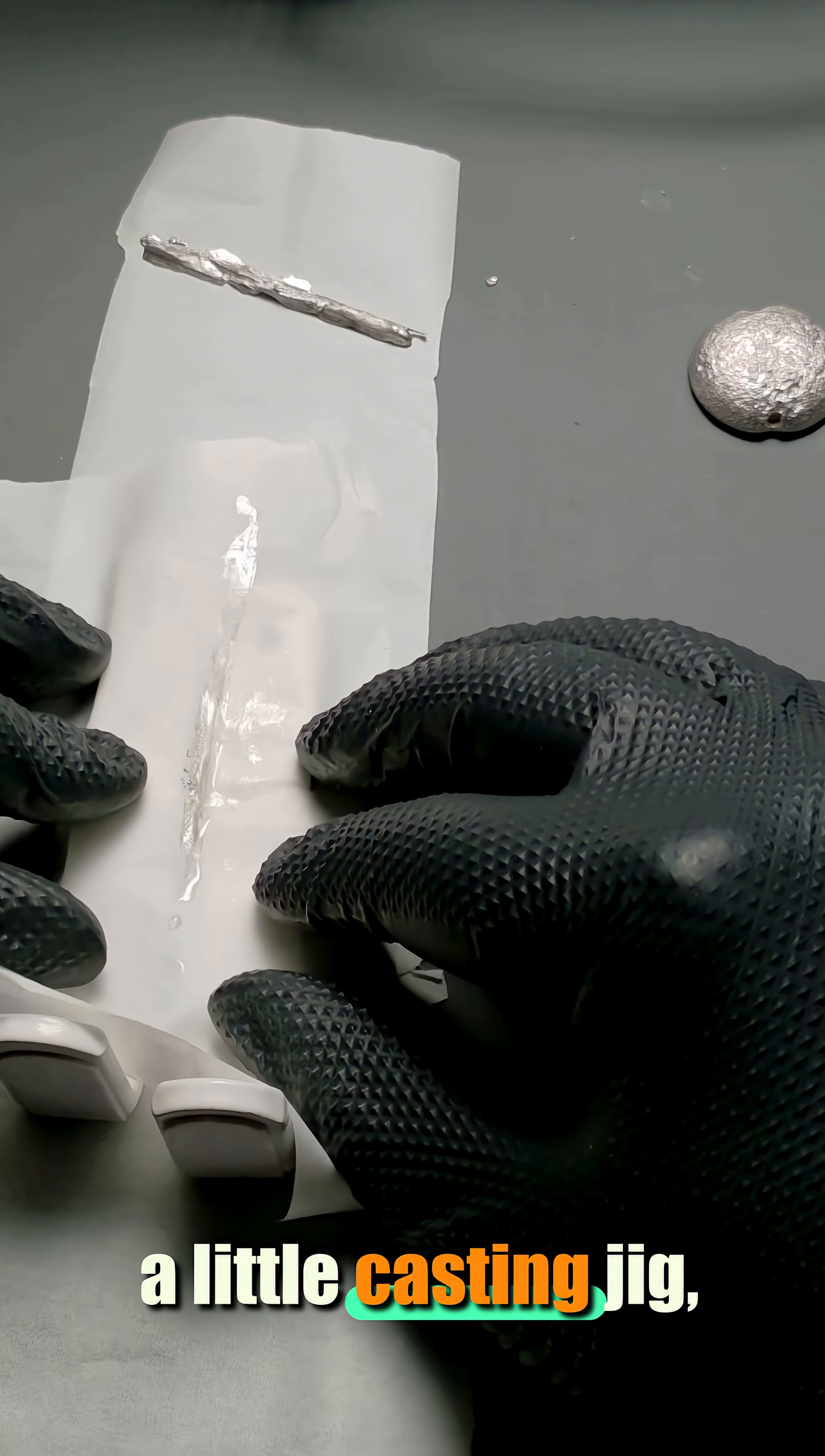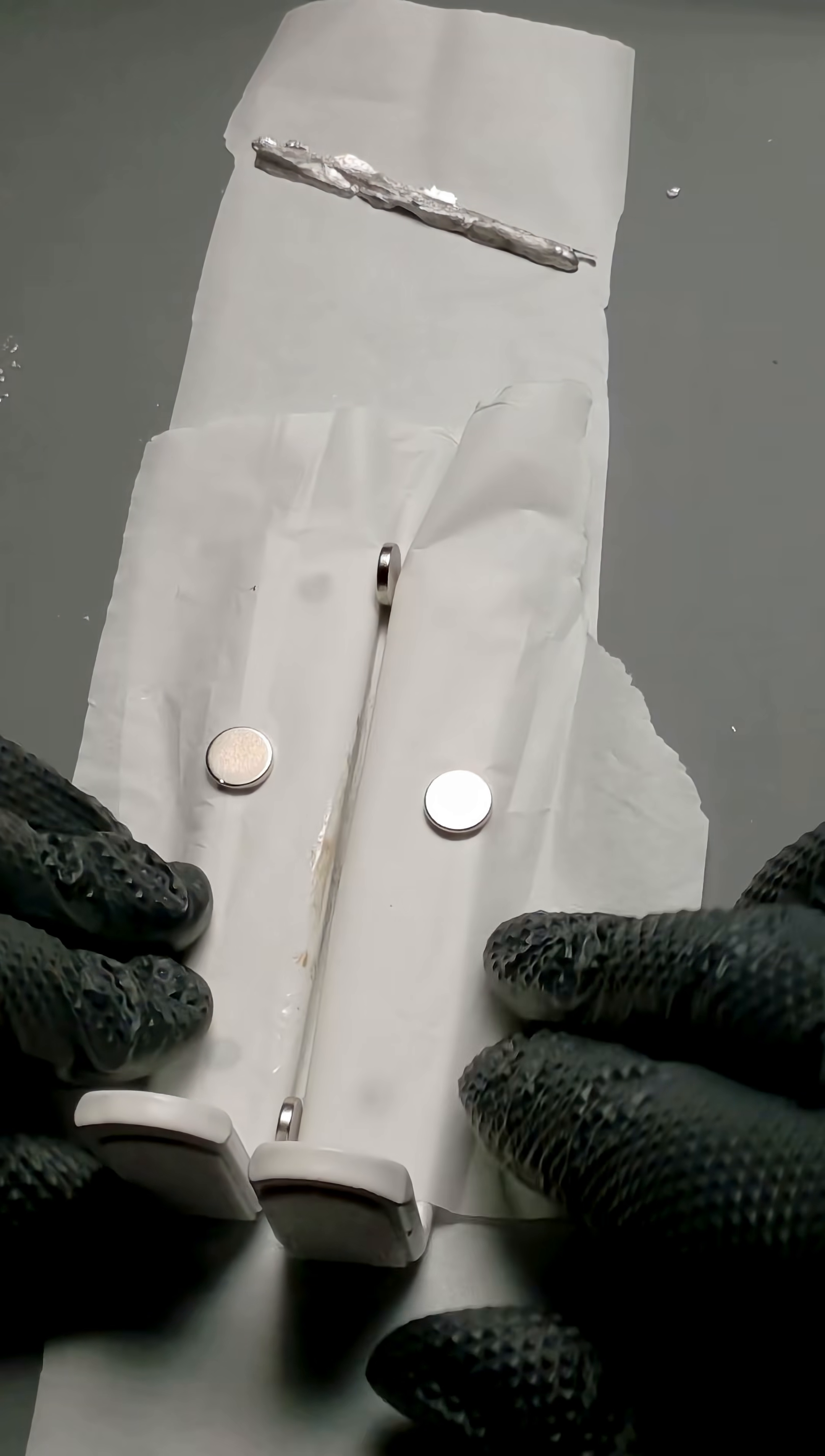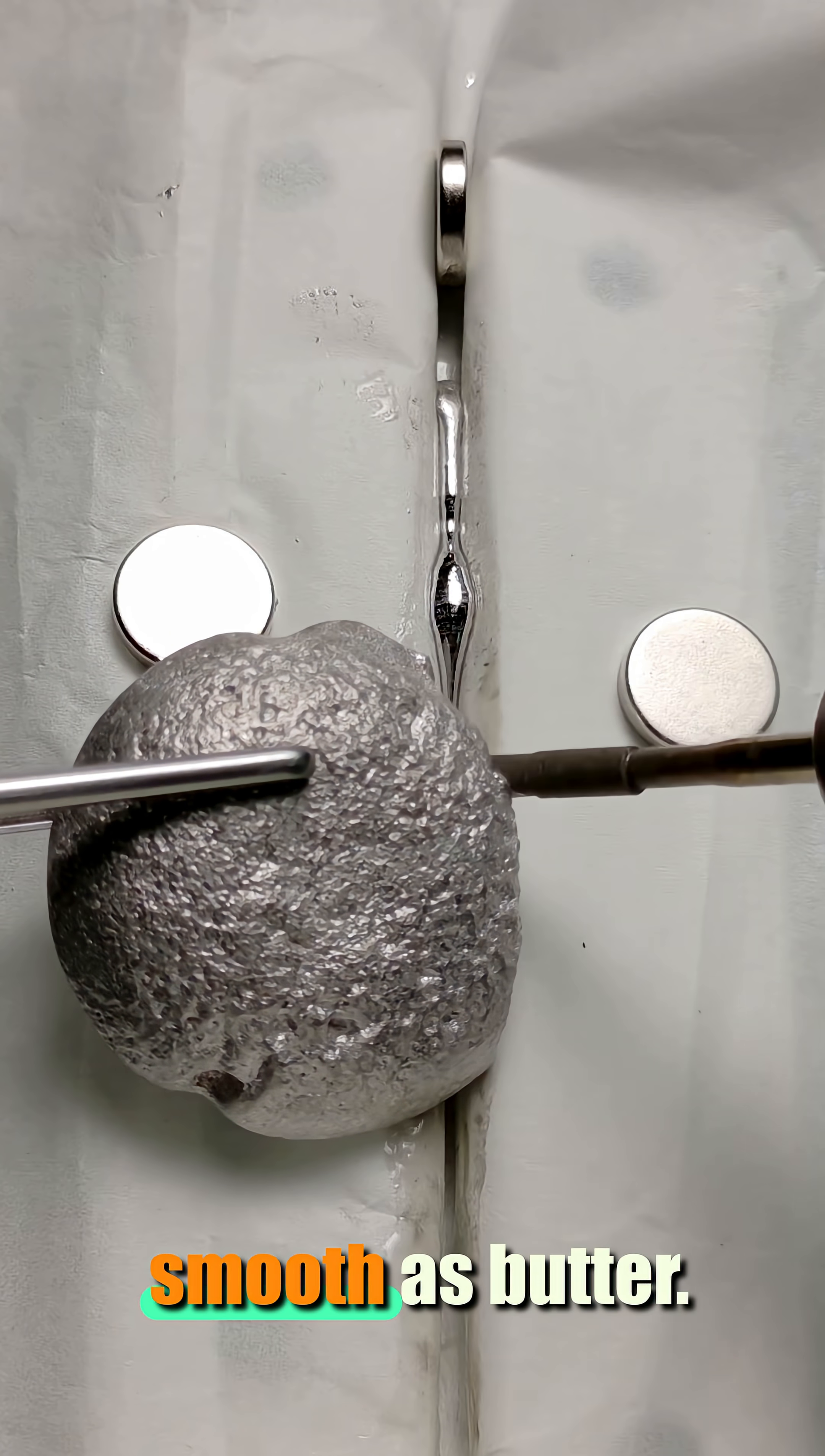Now you build yourself a little casting jig, you can get totally creative here. I'm just doing it like you'll see in a second. And then you add a bit of flux into the gap. That makes sure the metal distributes really nicely. Look at that, smooth as butter.